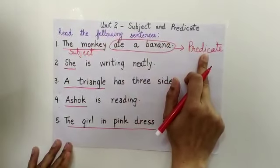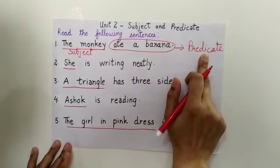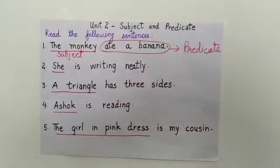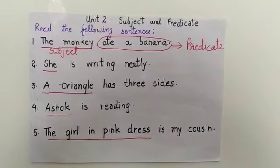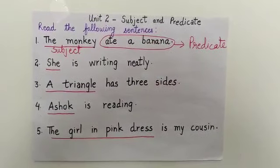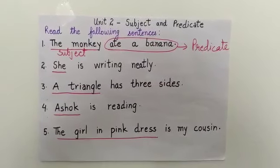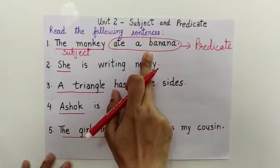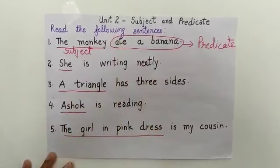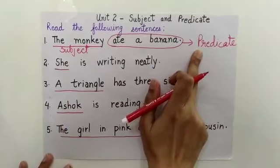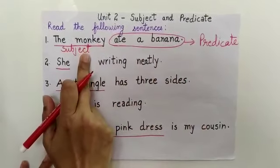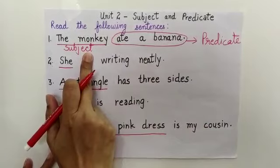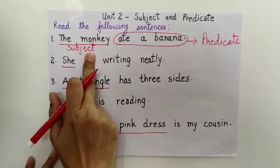And the predicate contains a verb. The predicate is the action part of the sentence. Action part means the predicate always tells us what the subject is doing.